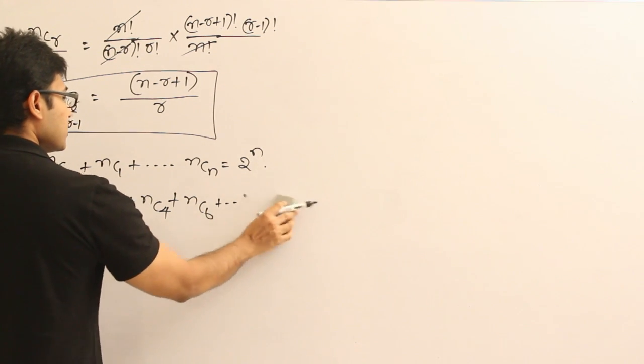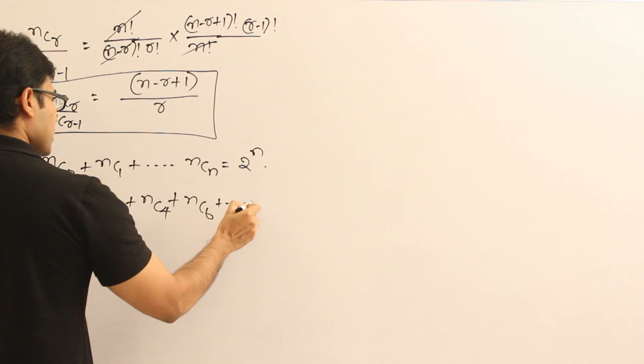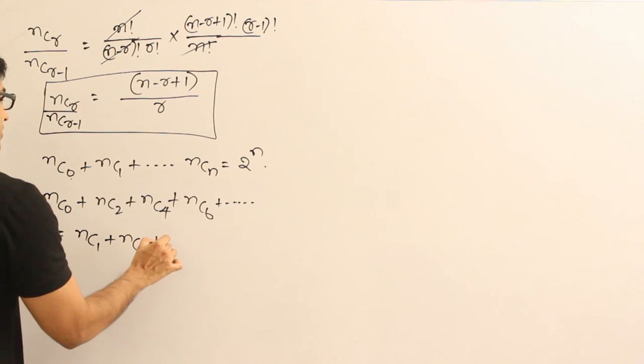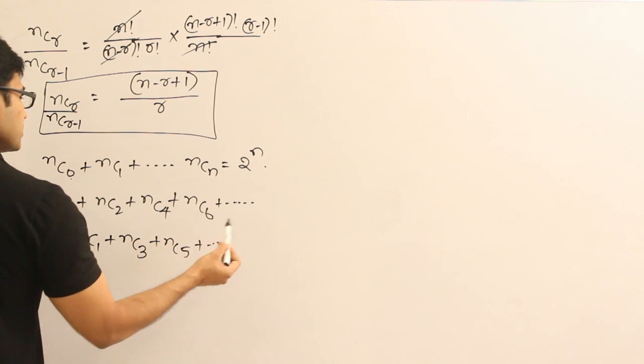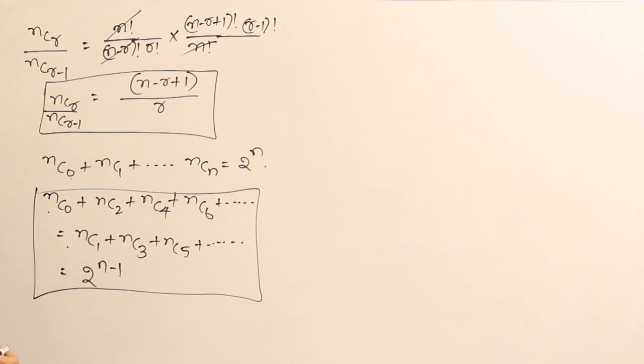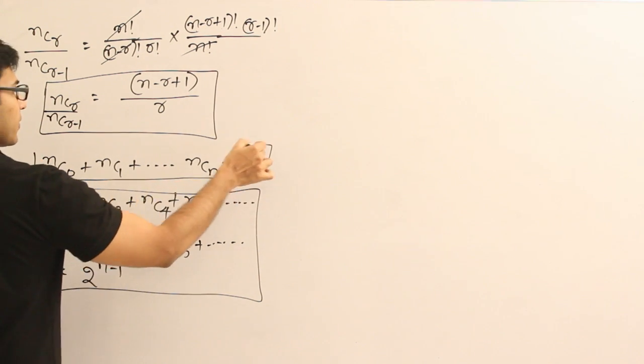So, you can think of it as sum of all even terms is equal to NC1 plus NC3 plus NC5 plus so on. Sum of odd terms. Sum of even terms is equal to sum of odd terms is equal to 2 power N minus 1. This is one interesting result. We have some applications on this. I will show you later. And I will prove you this when we go to the binomial theorem.